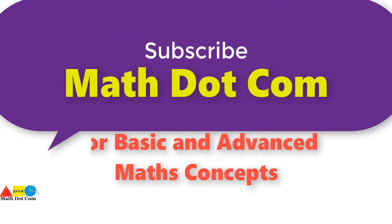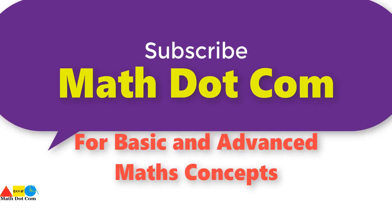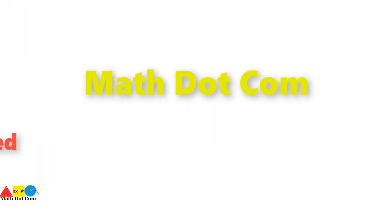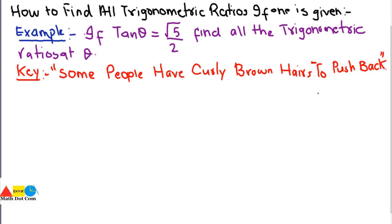If you are visiting our channel for the first time, please subscribe first to get basic and advanced math concepts. In today's lecture we are going to learn how you can find all the trigonometric ratios if only one is given. As you know, trigonometric ratios refers to the ratio of the sides of a right angle triangle. In this example we are given tan theta equals to root 5 over 2, and we need to find all the trigonometric ratios at theta.